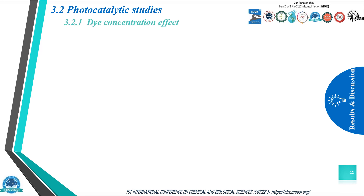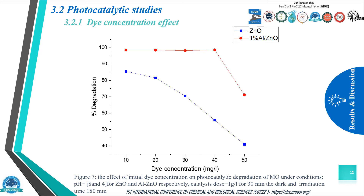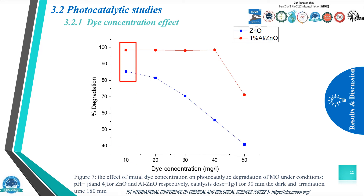We pass to the dye concentration effect. At the optimized initial pH of 4 and 8 for aluminum-doped zinc oxide and zinc oxide respectively, and under the same conditions as the first experiment, we adjusted the dye concentration between 10 and 40 milligrams per liter. The degradation rate reached its highest at 10 milligrams per liter for zinc oxide and 40 milligrams per liter for aluminum-doped zinc oxide. A decrease in photocatalytic activity was observed with increasing dye concentration.